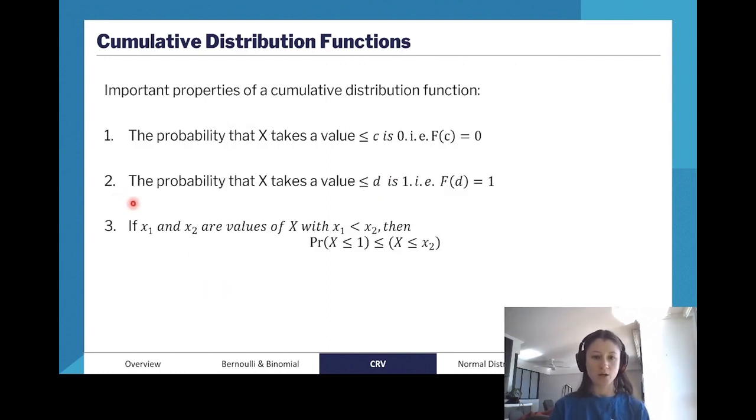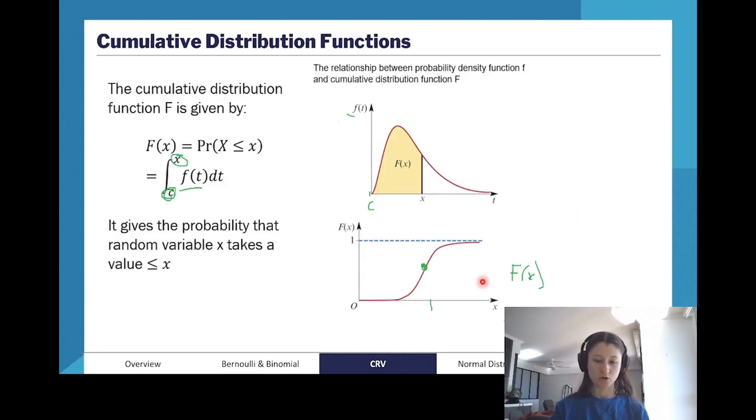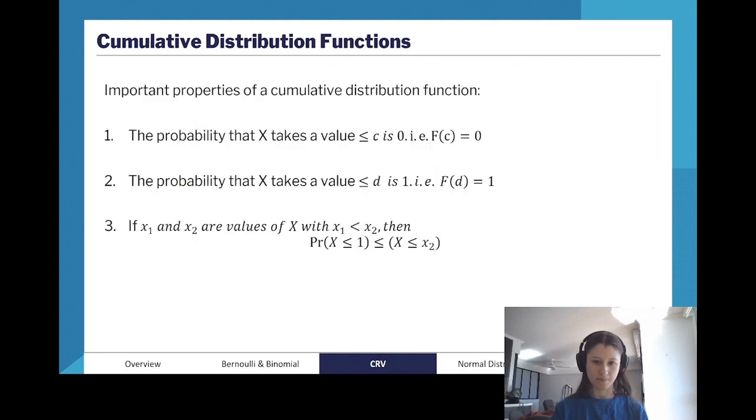Second, the probability that X takes a value less than D is one. So D is our end value. D might be a value up here.